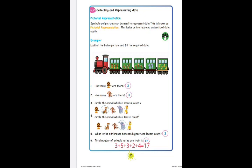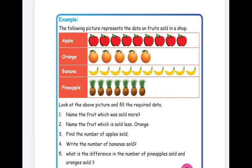Next example: the following picture represents data on fruits sold in a shop. The fruits sold are apples, oranges, bananas, and pineapples. By counting the fruit pictures, nine apples were sold, five oranges, ten bananas, and seven pineapples.